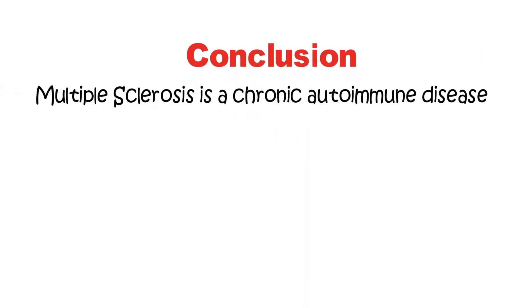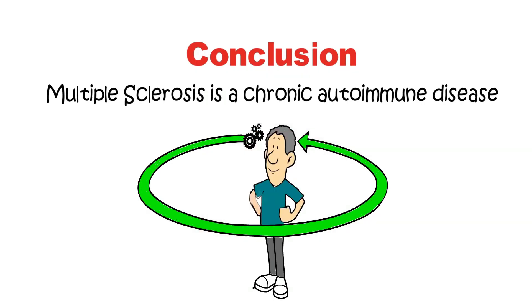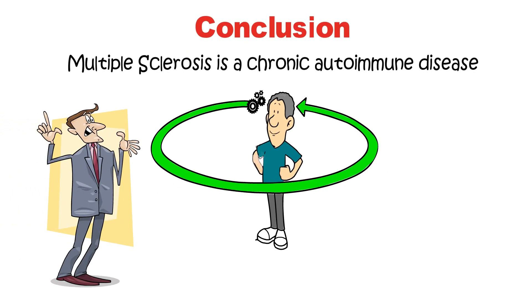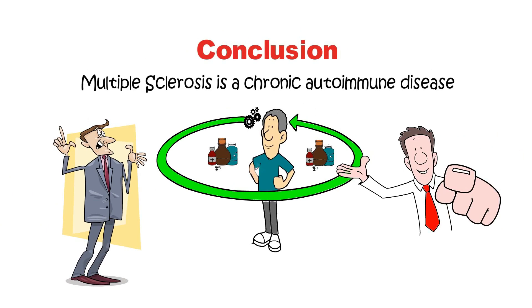Conclusion. In conclusion, multiple sclerosis is a chronic autoimmune disease that affects the central nervous system and can cause a wide range of symptoms. Although there is currently no cure for MS, there are treatments and therapies available that can help manage its symptoms and slow its progression.